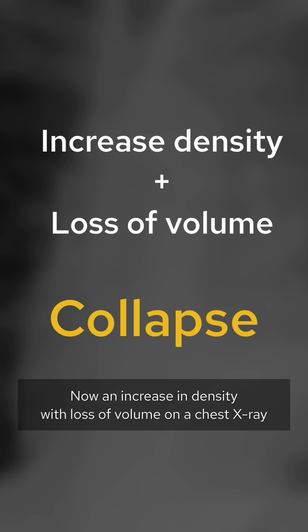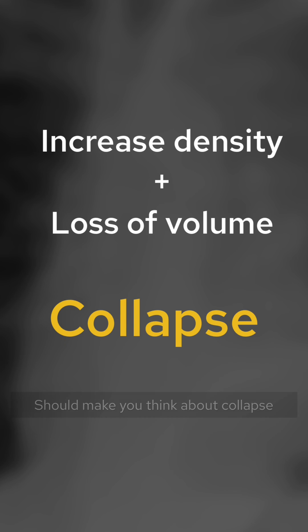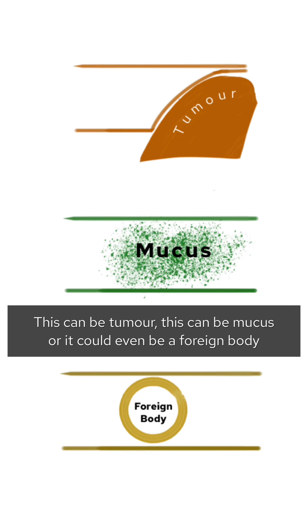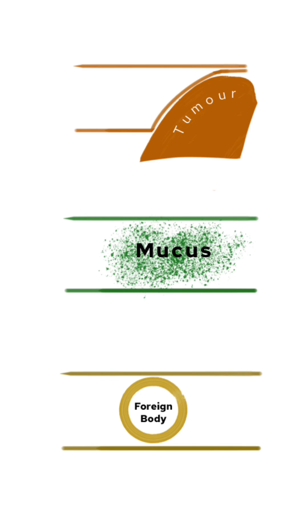An increase in density with loss of volume on a chest x-ray should make you think about collapse. Collapse happens when there's something blocking the airway — this can be tumour, it can be mucus, or it could even be a foreign body.